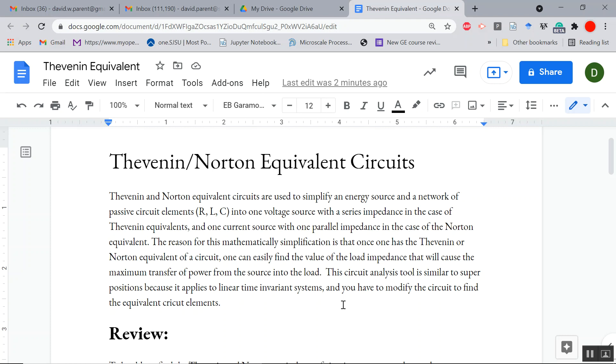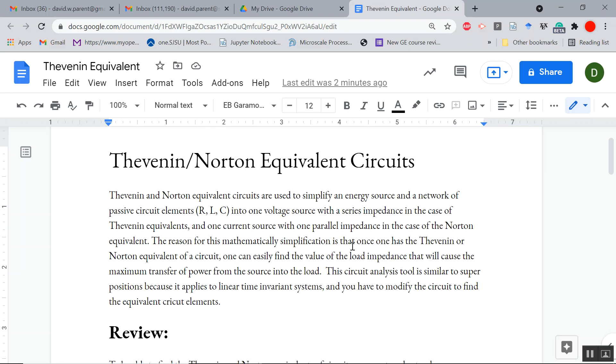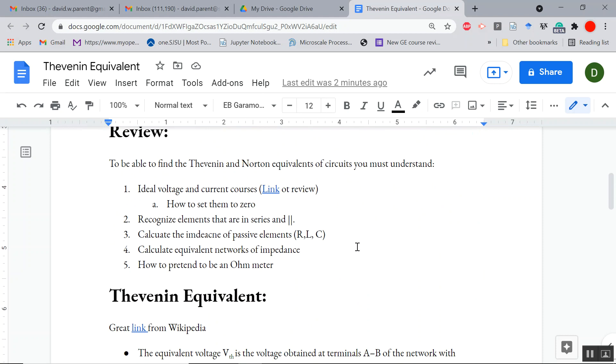Now, this is like superposition because we modify the circuit to find various things that we need to find. Also, this is for linear circuit elements. So, the things that you need to understand to be able to do this is what is an ideal voltage and current source and how to set them to zero.